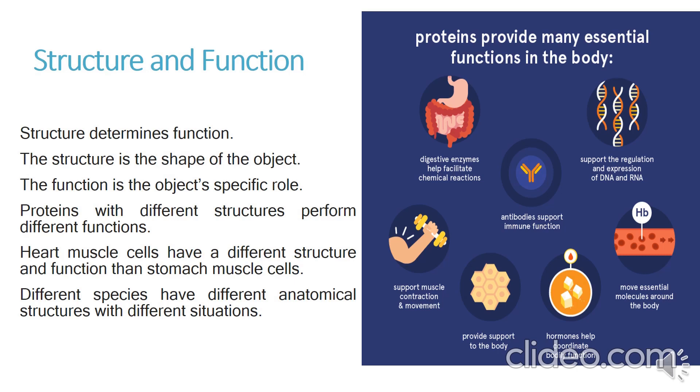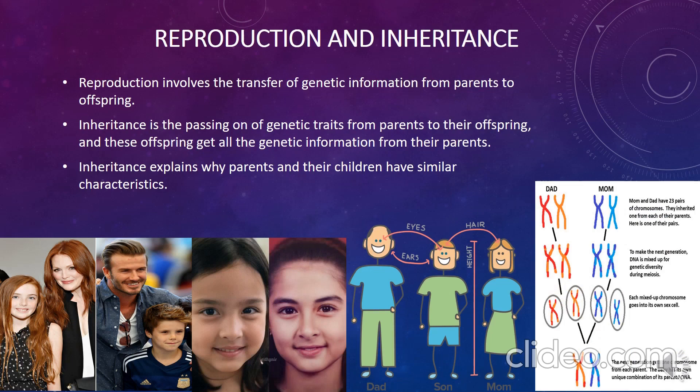Reproduction and inheritance: all living things reproduce, involving the transfer of genetic information from parents to offspring. Inheritance is the passing on of genetic information from parents to their children. Therefore, inheritance explains why parents and their children share similar characteristics.